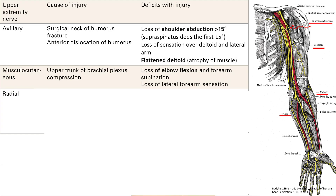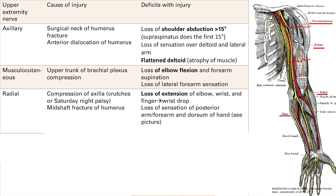Next in the review is the radial nerve. Remember, damage comes from compression of the axilla — and note that's the radial nerve, not the axillary nerve. Compression causes include crutches or Saturday night palsy. The other cause is a mid-shaft fracture of the humerus. The keyword for radial nerve injury is extension: extension of the elbow, wrist, and fingers is lost. Sensation loss covers the posterior arm, posterior forearm, and dorsum of the hand.